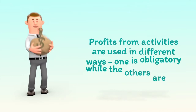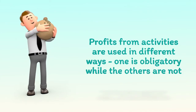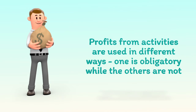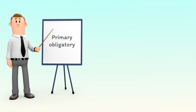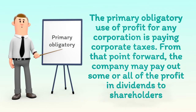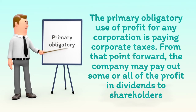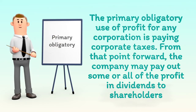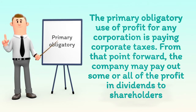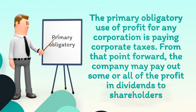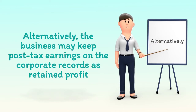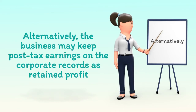Profits from activities are used in different ways. One is obligatory while the others are not. The primary obligatory use of profit for any corporation is paying corporate taxes. From that point forward, the company may pay out some or all of the profit in dividends to shareholders. Alternatively, the business may keep post-tax earnings on the corporate records as retained profit.